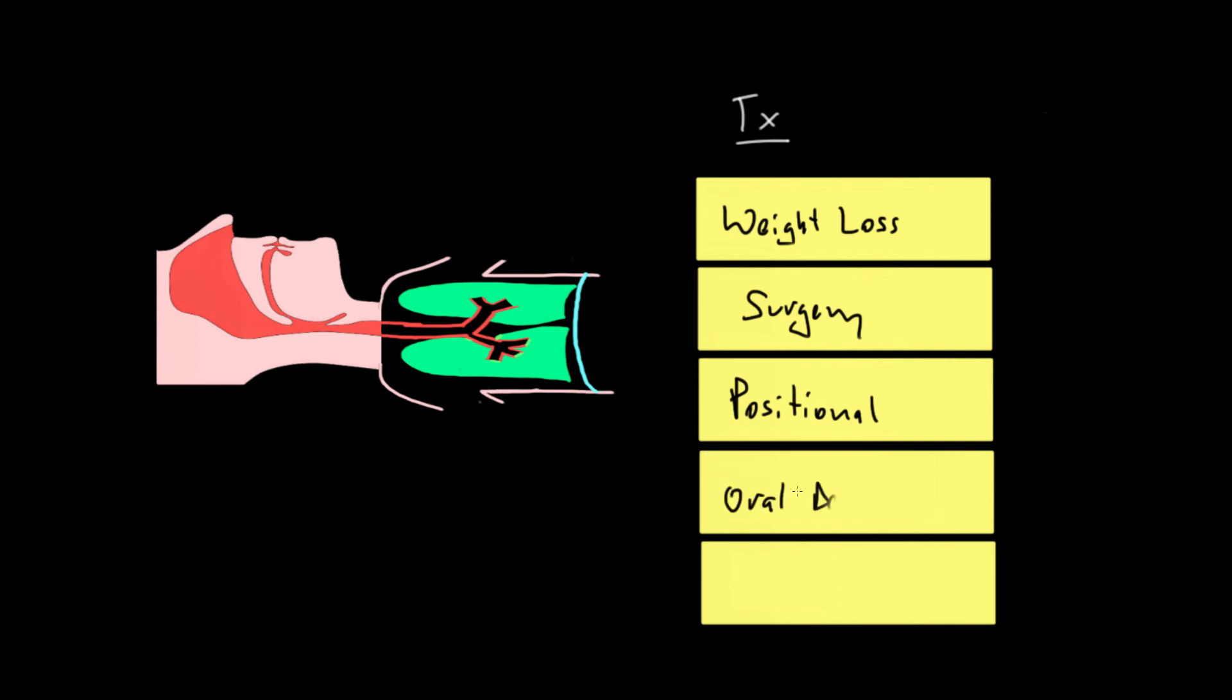Another non-invasive therapy would be an oral device. This would be something like a mouth guard that could tend to push the jaw forward and in doing so, widen the airway and allow air to flow normally in and out between the lungs and the outside world. All four of these treatments though are for mild obstructive sleep apnea.